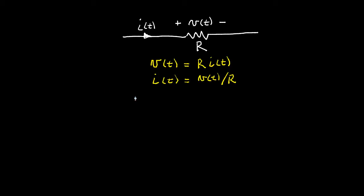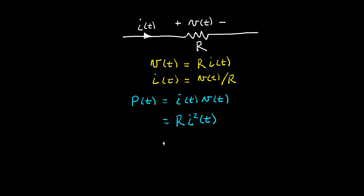To compute the power associated with the resistor, since the current enters the positive polarity of the voltage, power equals current times voltage. Using the first form of Ohm's law and replacing the voltage with R times I gives us P equals R times I squared, in watts. Using the second form and replacing current with V divided by R gives us P equals V squared divided by R, also in watts. So if we know the current we use R·I², and if we know the voltage we use V²/R.